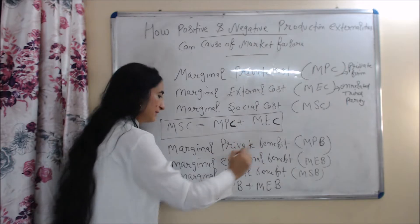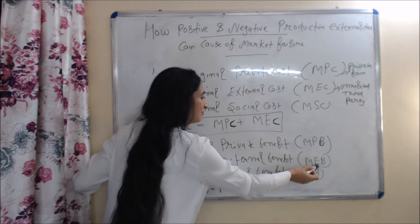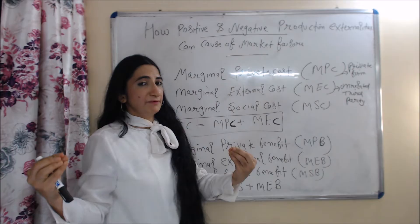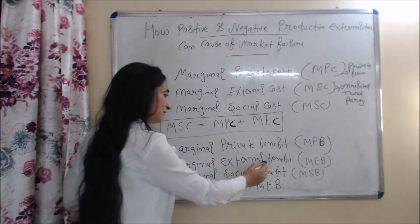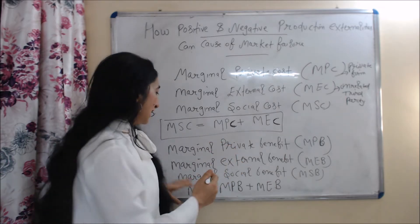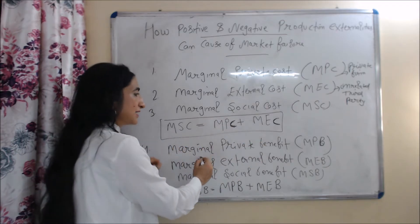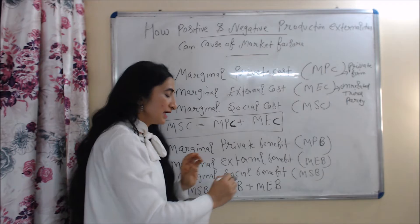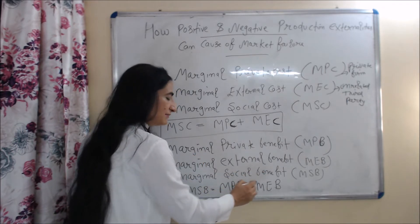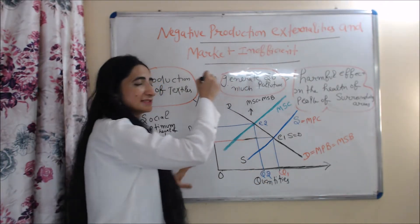Now we talk about marginal private benefit, marginal external benefit, and marginal social benefit — in short, MPB, MEB, and MSB. Marginal private benefit is the marginal benefit of private firms. Marginal external benefit is the marginal benefit of the unrelated third party. And marginal social benefit is the sum of marginal private benefit and marginal external benefit, written as MSB = MPB + MEB.